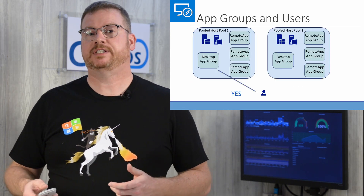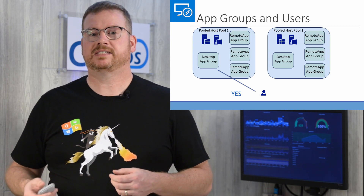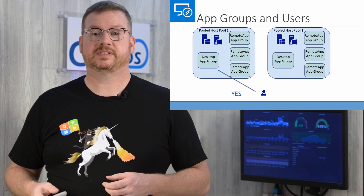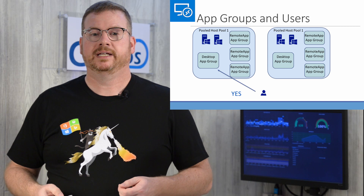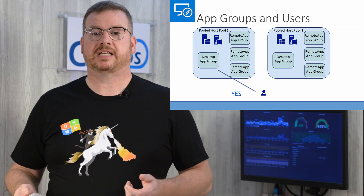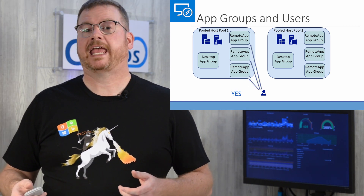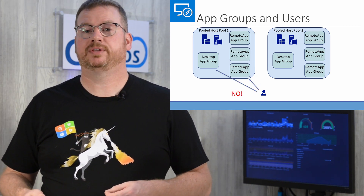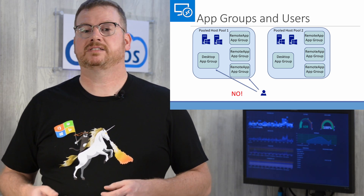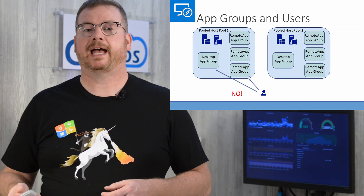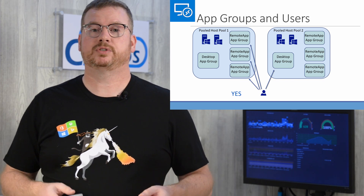Here's a visual for assigning users to app groups. You can see in this slide the user is assigned to the desktop application group. Here, the user is assigned to multiple remote app groups. The user can't be assigned to both a desktop and remote app group. For the user to have access to both a remote app and remote desktop, that requires two host pools.